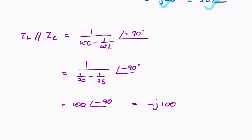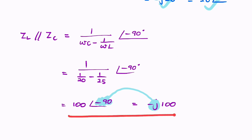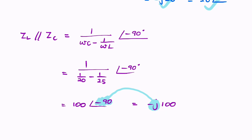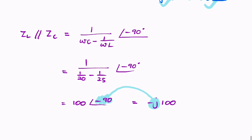When L and C are in parallel, you always get something imaginary with a phase angle of −90 degrees, or −π/2 radians. The magnitude is 1/(ωC) minus 1/(ωL), which in this case is 100. I hope you found that helpful.